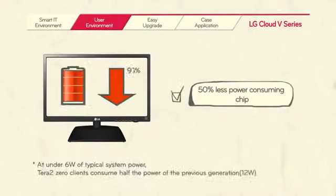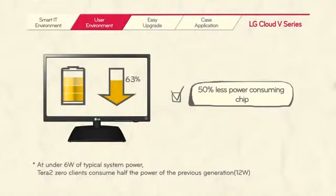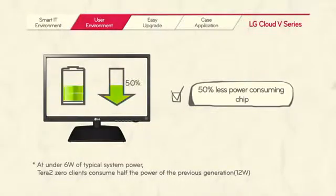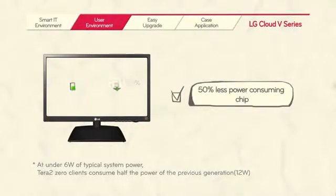Second, the Terra 2 chipset is around 50% less power-consuming than the Terra 1 chipset. At under 6 watts of typical system power, Terra 2's zero clients consume only half the power of the Terra 1, which runs at around 12 watts.